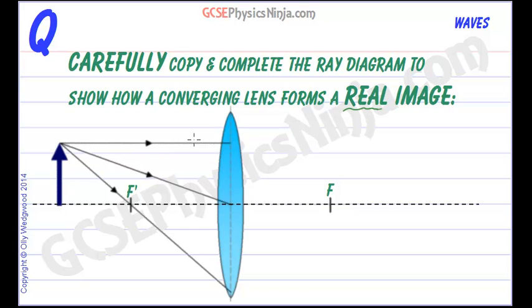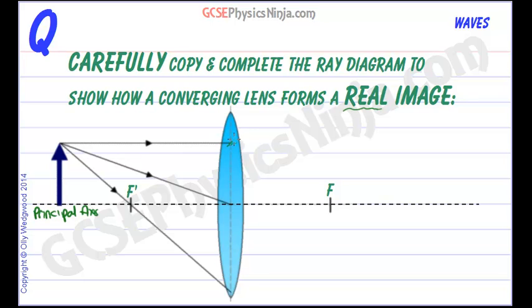We've got three rays. The first ray is parallel to the principal axis. The dotted line here is called the principal axis - it's the centre line of the lens. It goes through the principal foci of the lens and through the optical centre. A ray which is parallel to the principal axis and goes into the lens will always be converged through the principal focus F. So let's just mark that on to start with.